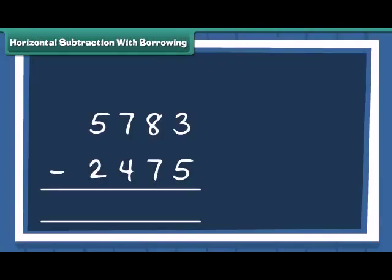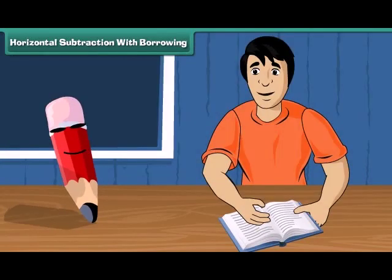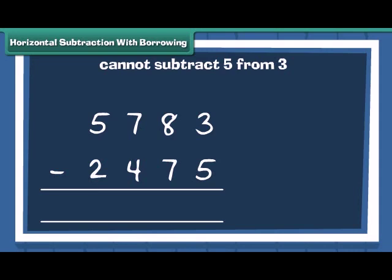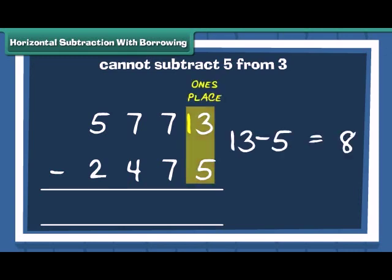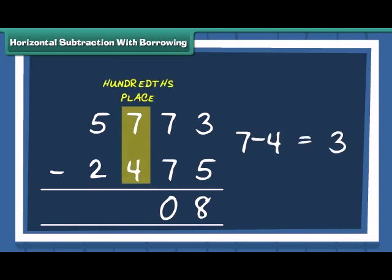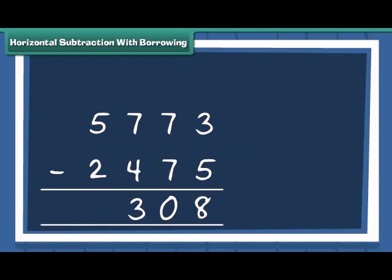Mac, how will we solve this question? It's simple. We start subtraction of numbers at 1's place. Note that you cannot subtract 5 from 3. So, you will borrow 10 from 8 to make 13, and 13 minus 5 is equal to 8. Subtract the 10's to get 0. At 100's place, 7 minus 4 is 3. Finally, subtract the 1000's to get 3. Was it not easy?